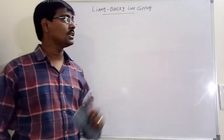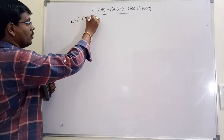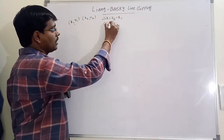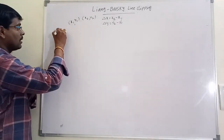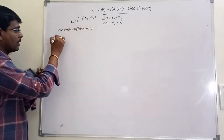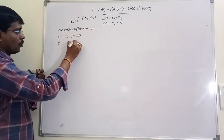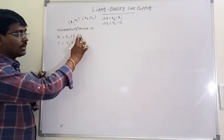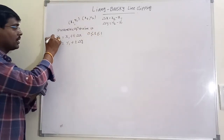In this session we will discuss the Liang-Barsky line clipping algorithm. Consider two endpoints of a line: x1, y1, x2, y2. Let delta x equal x2 minus x1, and delta y equal y2 minus y1. The parametric equation of a line is: x equals x1 plus t times delta x, y equals y1 plus t times delta y, where t ranges from 0 to 1.